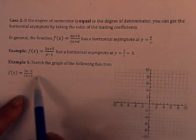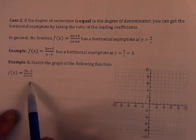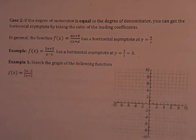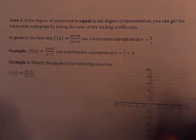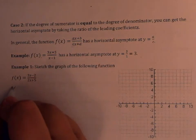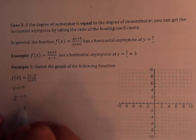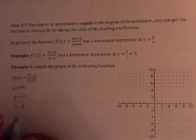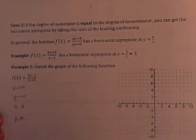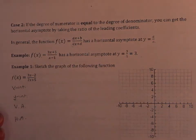Now we're going to sketch the graph of 3x minus 2 over 2x plus 5. We will find the x-intercepts, y-intercept, vertical asymptote, horizontal asymptote, and if necessary, we are going to do positive and negative intervals.